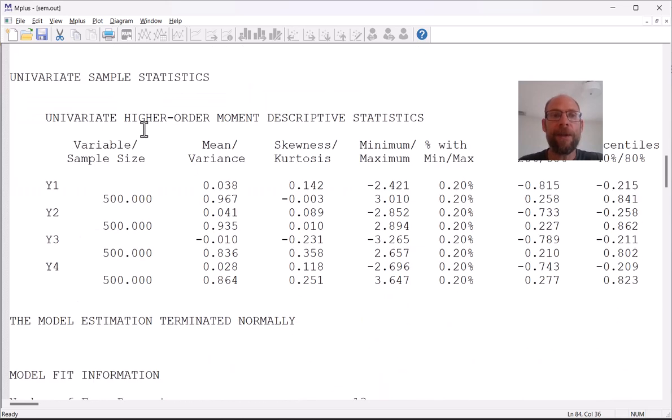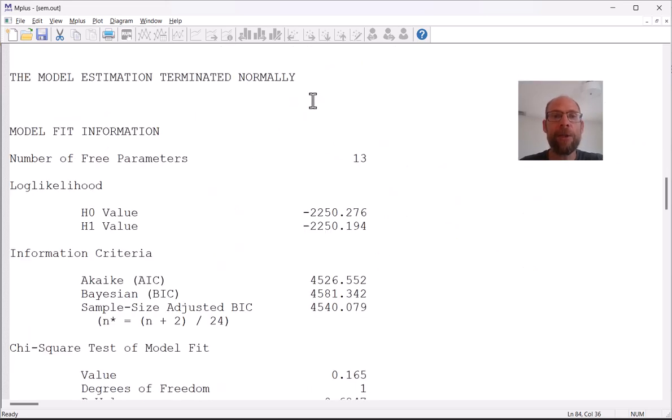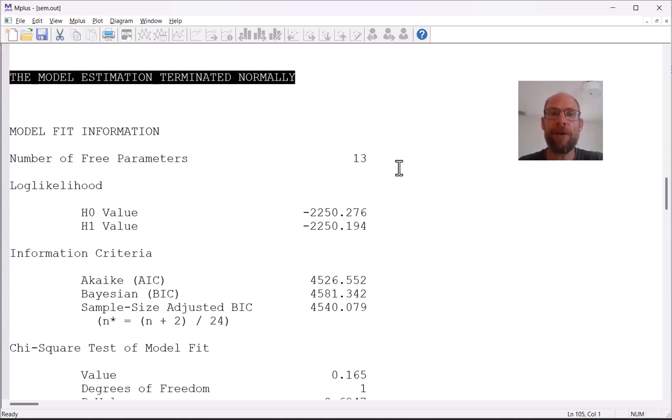You also get univariate sample statistics in Mplus. You can take a look at the skewness and kurtosis for example as well as the minimum and maximum and percentiles. And then after that you should check that you get the message 'the model estimation terminated normally' and preferably no additional message. Any additional message may indicate that there was some sort of estimation problem maybe an improper solution or some other kind of problem.